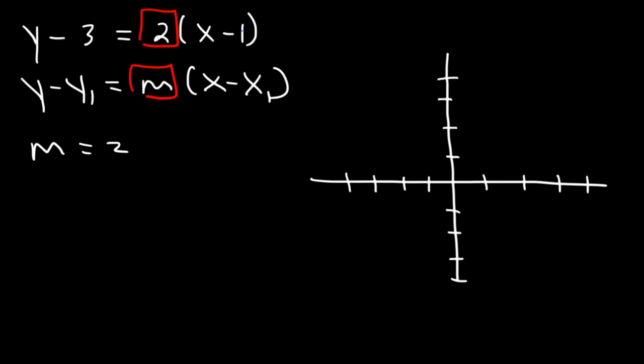And then we can see that x1 is positive 1, not negative 1, but positive 1, and y1 is positive 3. So we have the point 1, 3. x is 1 and y is 3.